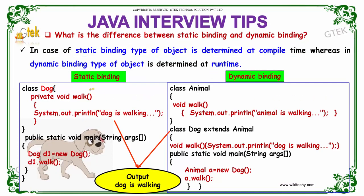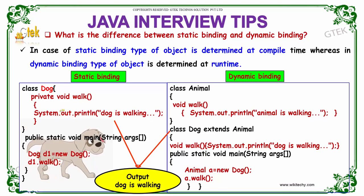If you see over here, this example is for static binding. Here, in our main, we are creating an object d1 of the type Dog and we are invoking the method walk using the object d1. So, d1.walk will invoke the method over here and the output will be 'dog is walking'.